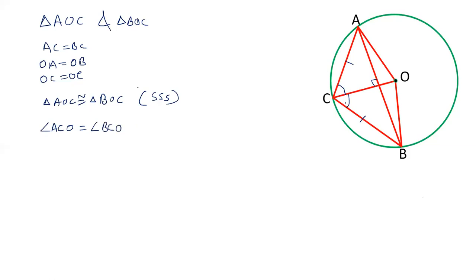These two angles are equal, that is OC is angle bisector of angle ACB. So triangle ACM, suppose this point is M. Now triangle ACM and triangle BCM. AC is equal to BC. Angle ACM is equal to BCM and CM is equal to CM. This third is common.